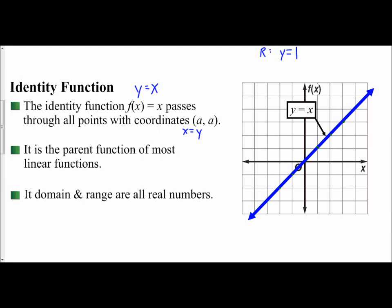The domain and range for the linear function: the arrows go up and to the right forever and down and to the left forever. Since it goes to the right and to the left forever, the domain is all real numbers. Since it goes up and down forever, the range is all real numbers. So for a linear function, the domain and range are always going to be all real numbers because the arrows extend on forever. So y equals x is going to be the parent function we'll use for most of our linear functions.